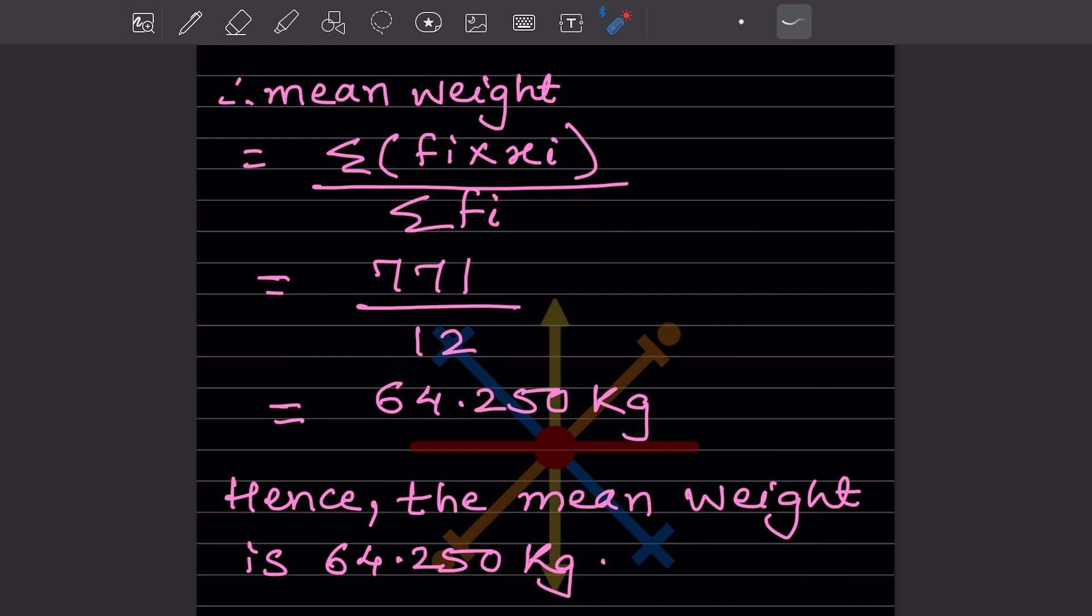Hence, the mean weight is 64.250 kilograms. By this way, we have completed how to find the mean by two methods. Please do like and subscribe to this channel so you get notification of other parts and many more. Thank you.